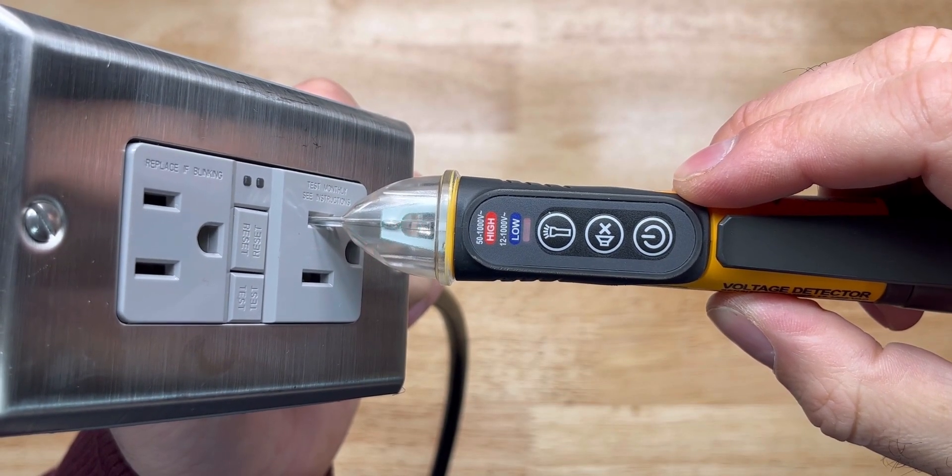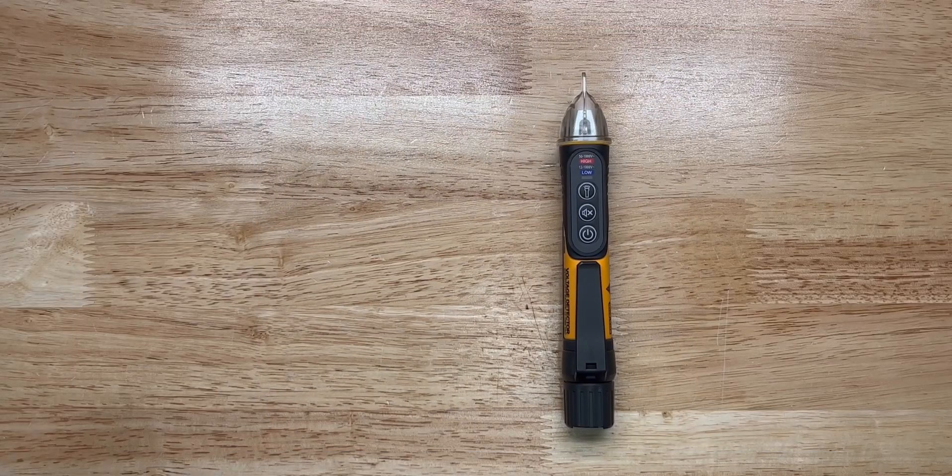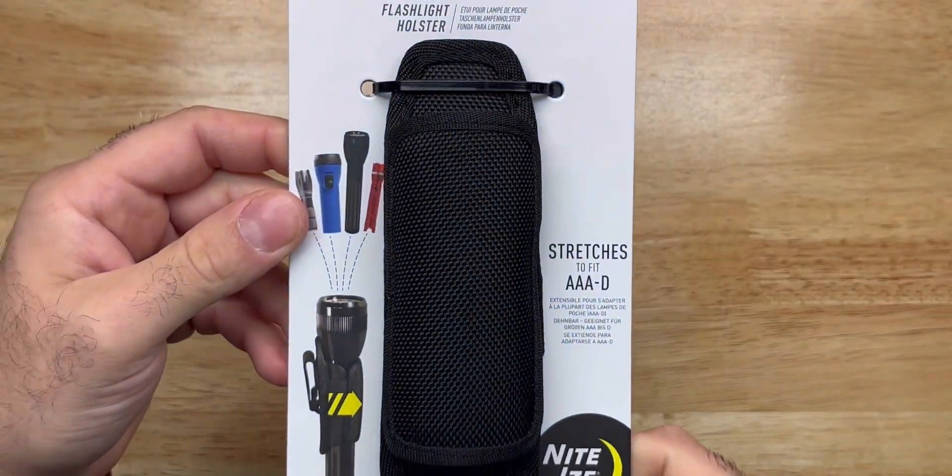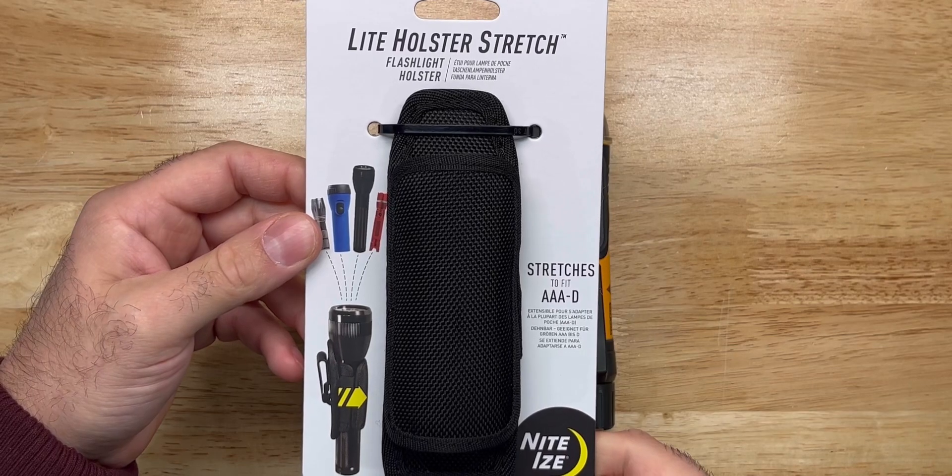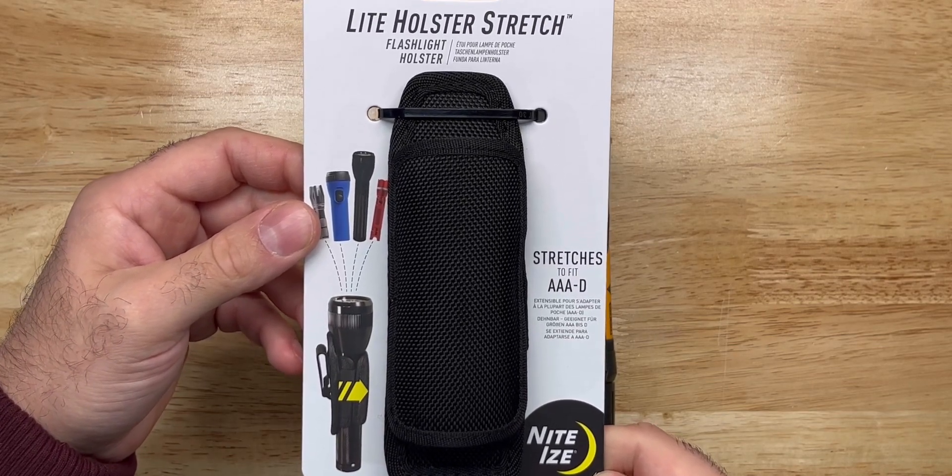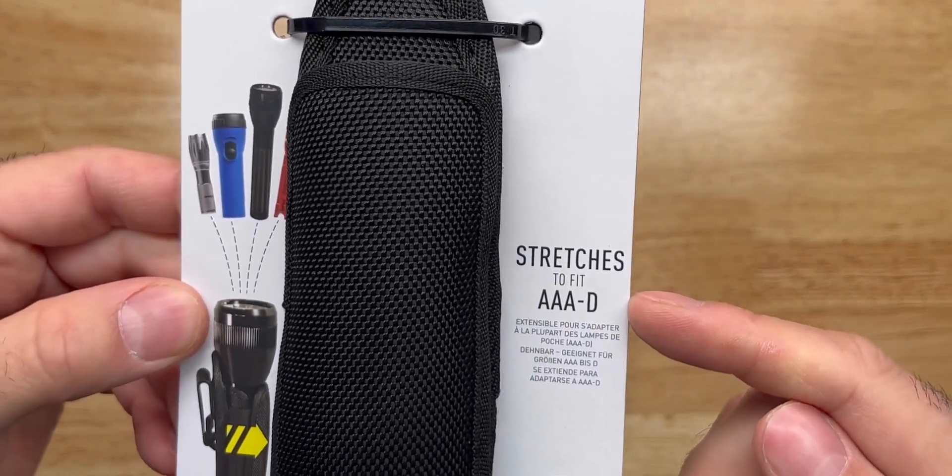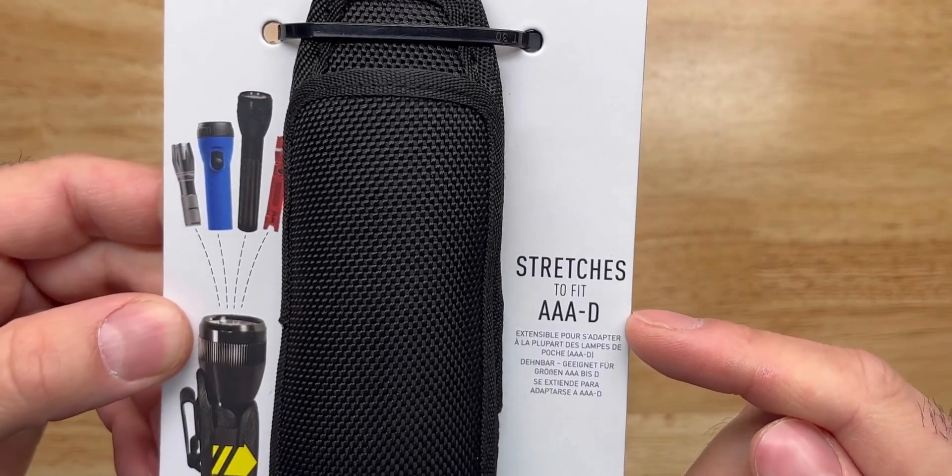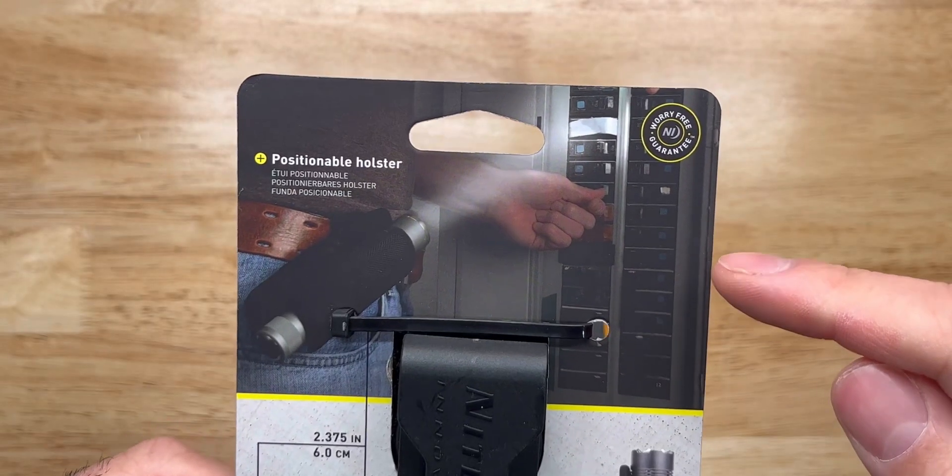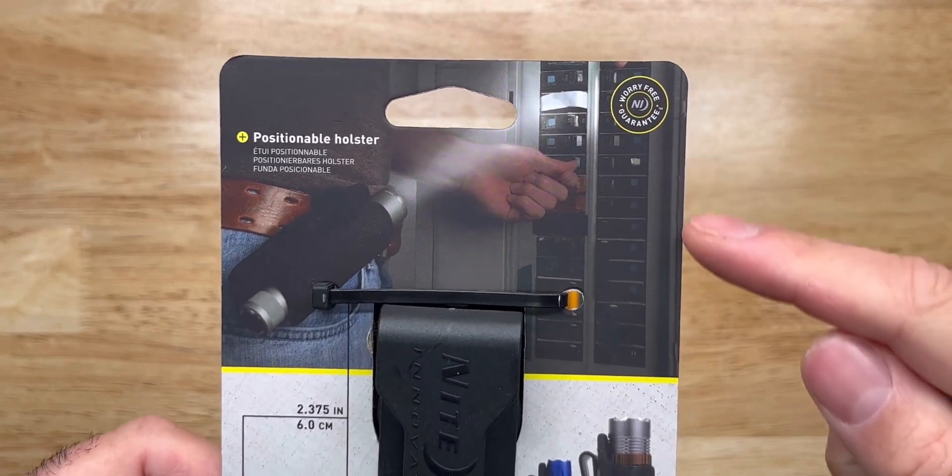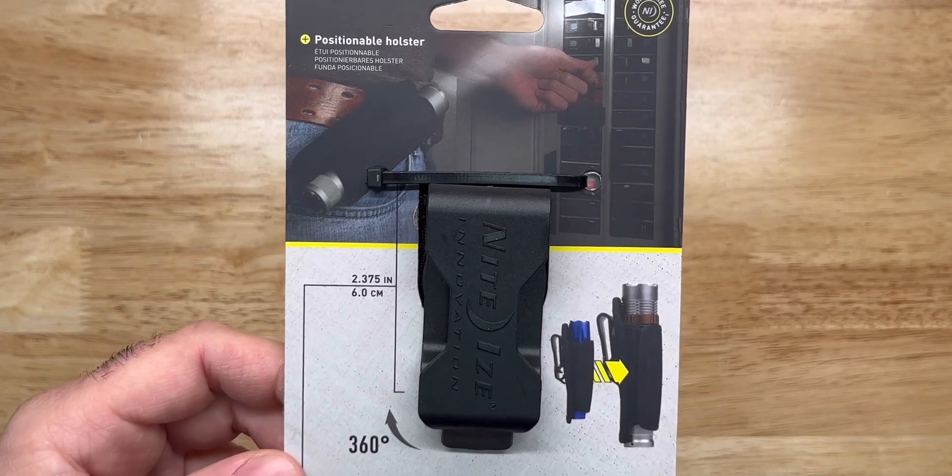I came across this item. It's called the Night Eyes Light Holster Stretch and it's a flashlight holster. And interestingly enough, it's a stretchable one. It can stretch to fit triple A all the way up to size D battery flashlights. It also shows a picture of an electrical panel as to kind of hint the idea that maybe these things can also be used to hold these.